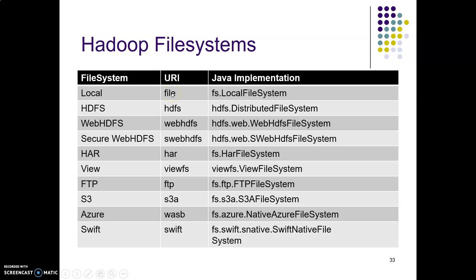Let us see how these are implemented using the URI. For the local file system, we use the URI 'file', and in Java we use 'FileSystem.getLocal' which accesses the local file system. For HDFS, the URI is 'hdfs' — for example, 'hdfs://localhost' — and the Java implementation uses 'DistributedFileSystem'.